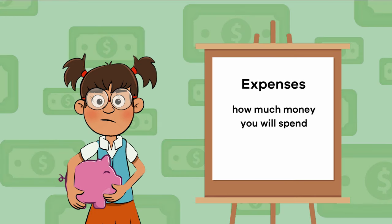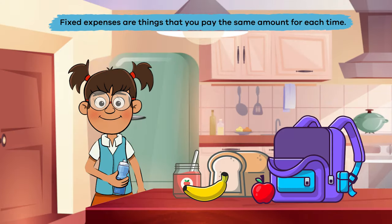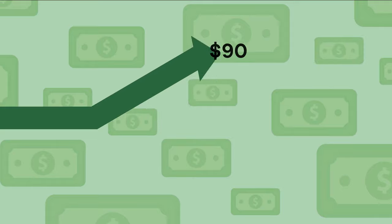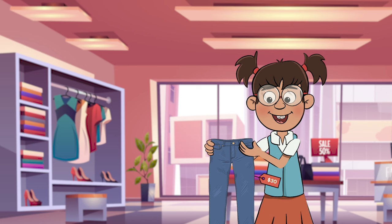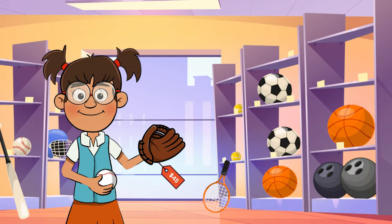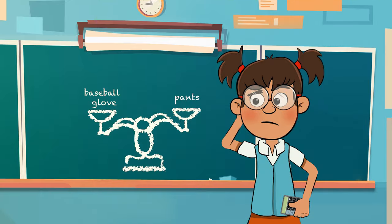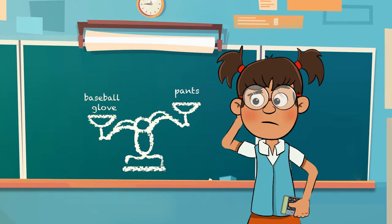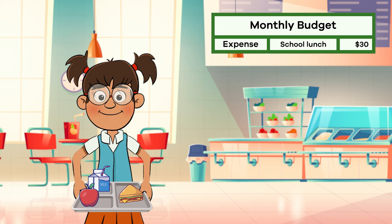Next, Frankie has to figure out how much money she thinks she will spend. There are two types of expenses: fixed and variable. Fixed expenses are things you pay the same amount for each time, like school lunch. Variable expenses are the opposite — they vary or change. For instance, one month Frankie wants to buy a pair of pants, and the next she wants to buy a baseball glove. The prices of these items are different from each other, which means those expenses are harder to plan for.